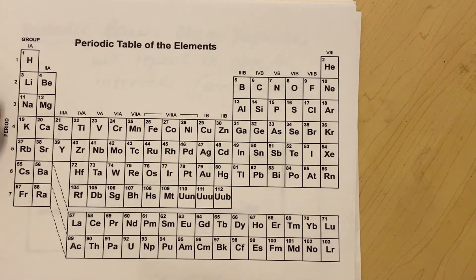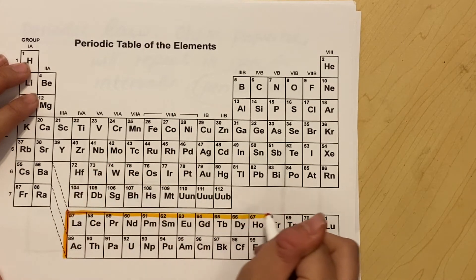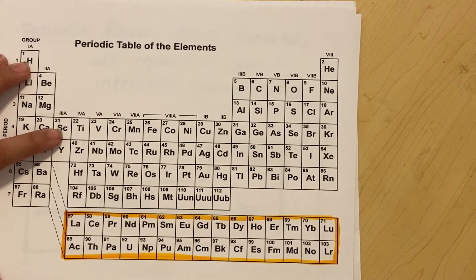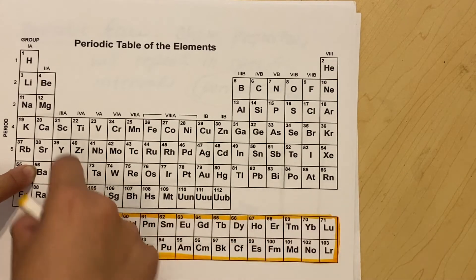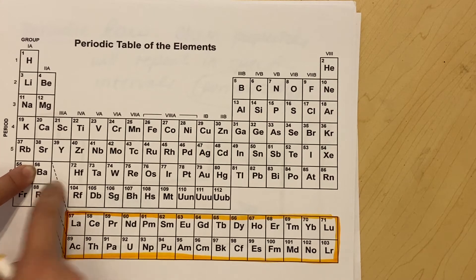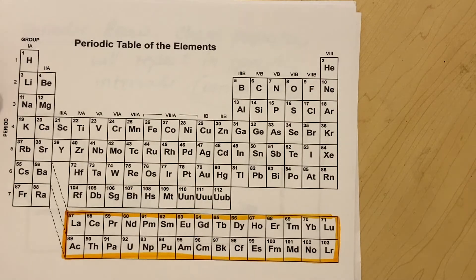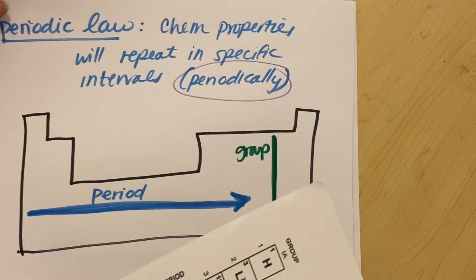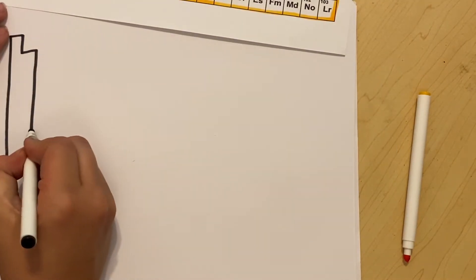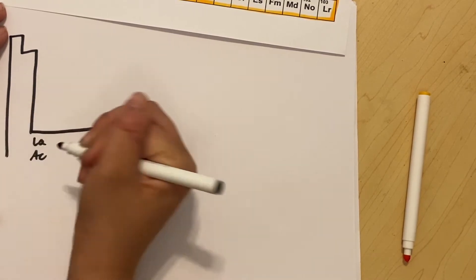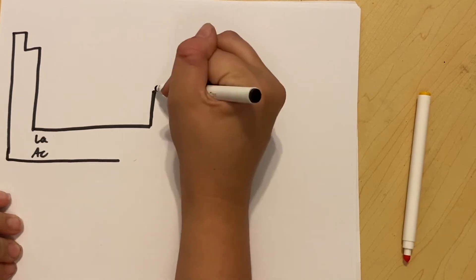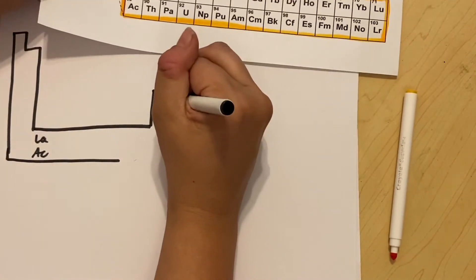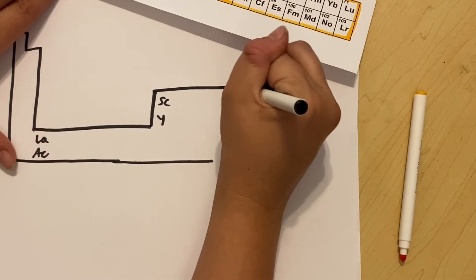The other thing about your periodic table is this section at the bottom. The only reason we put this giant section down at the bottom of the page is that it actually fits right in here between barium and hafnium. Your lanthanides and actinides fit right in there. If I was going to draw the periodic table the way it actually should be, it would go across like this for my lanthanides and actinides. Then it would come up for my transition metals, starting at scandium, going all the way across.